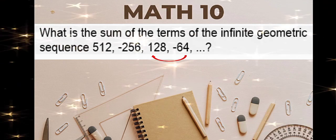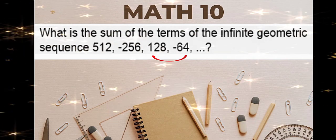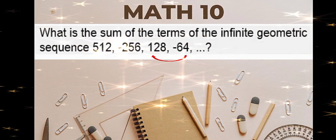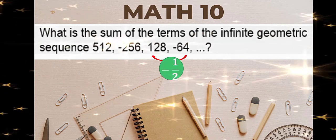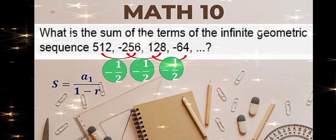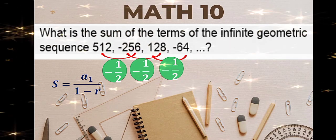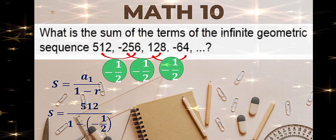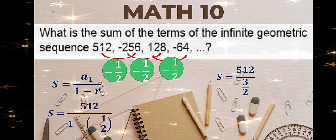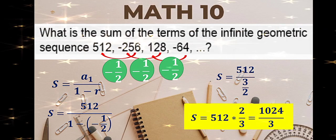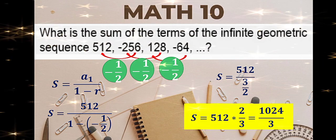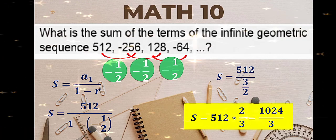What is the sum of the terms of the infinite geometric sequence 512, 256, negative 128, and negative 64? Look for the common ratio first: negative 64 divided by 128 is negative 1/2. Same goes with the other terms. This is your common ratio. Using the formula for infinite geometric sequence: first term is 512 and ratio is negative 1/2. Simplify: double negative becomes positive, 1 plus 1/2 is 3/2. Keep-change-flip: 512 times 2/3 is 1024 divided by 3. This is the sum of the infinite geometric sequence.